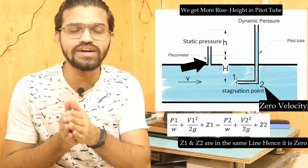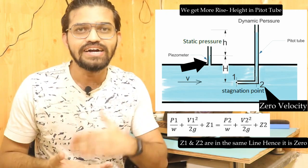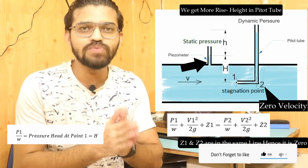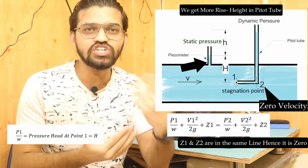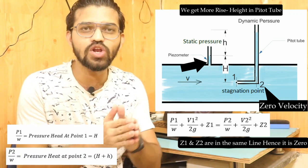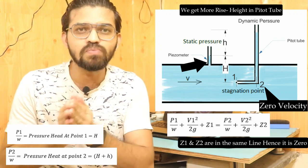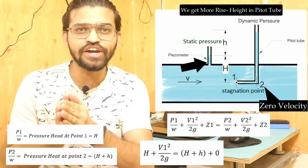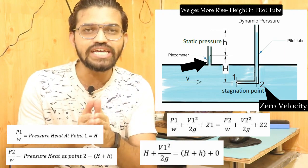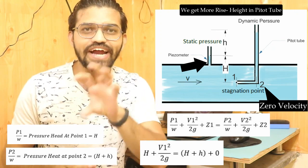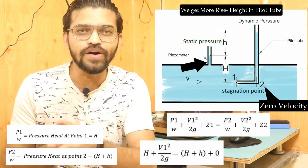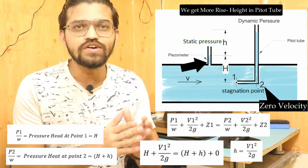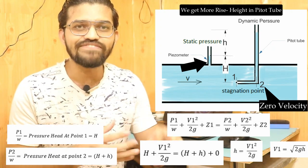At section 1 the pressure head p1/w = h, and at section 2 the pressure head p2/w = h + H (where H is the rise in the pitot tube). Since velocity at section 2 is zero, v2²/2g = 0. The equation simplifies to: h + v1²/2g = h + H, which gives v1²/2g = H, and therefore v1 = √(2gH).